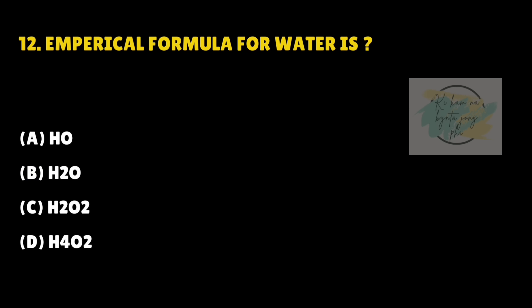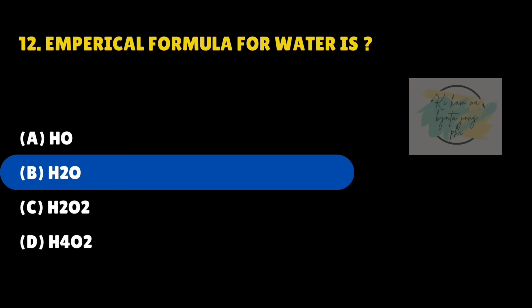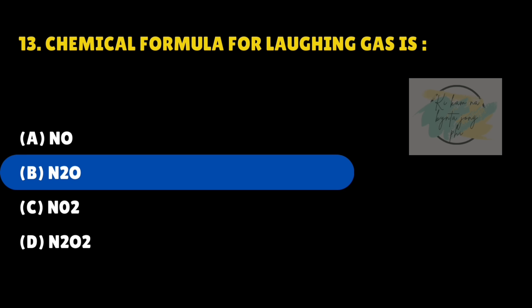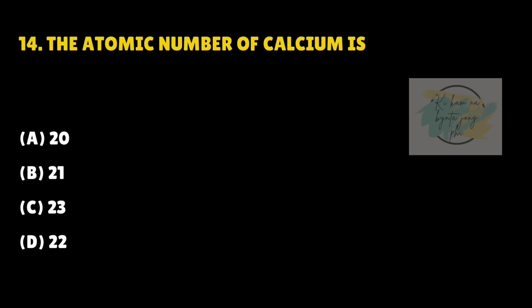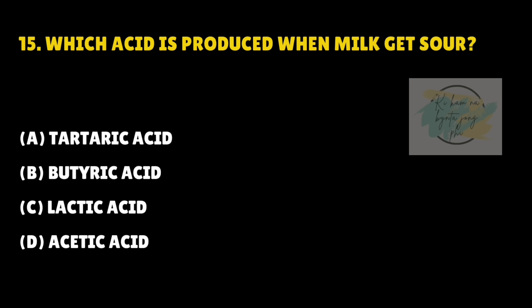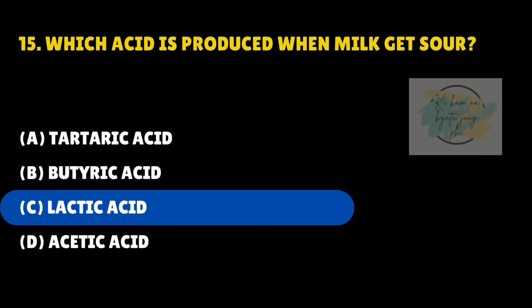The empirical formula for water is — answer is B — H2O. The chemical formula for laughing gas is — answer is B — N2O. The atomic number of calcium is — answer is A — 20. Which acid is produced when milk gets sour? Answer is C — Lactic acid.